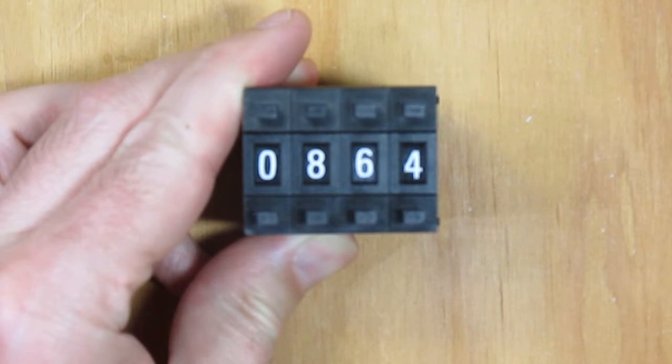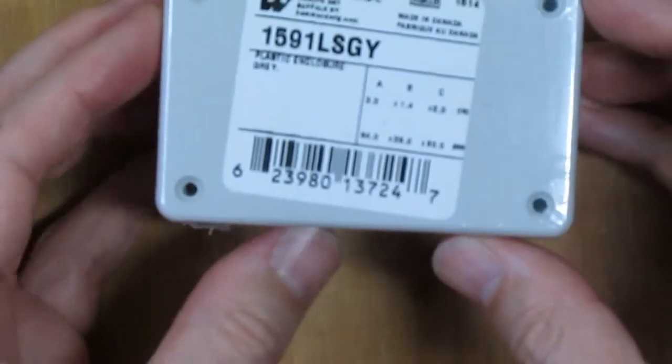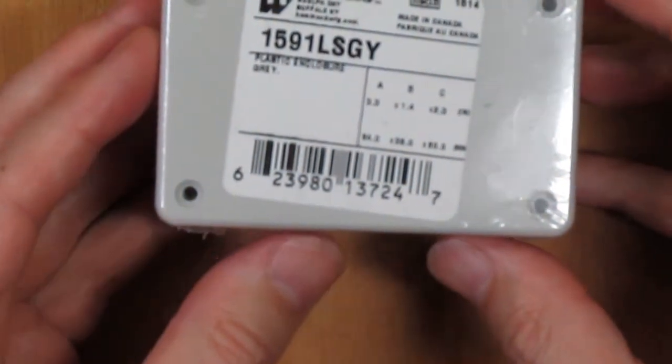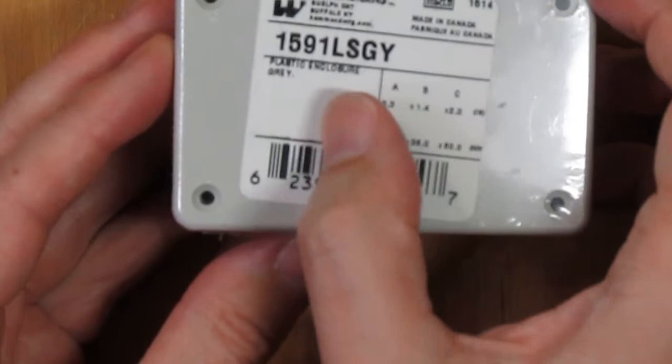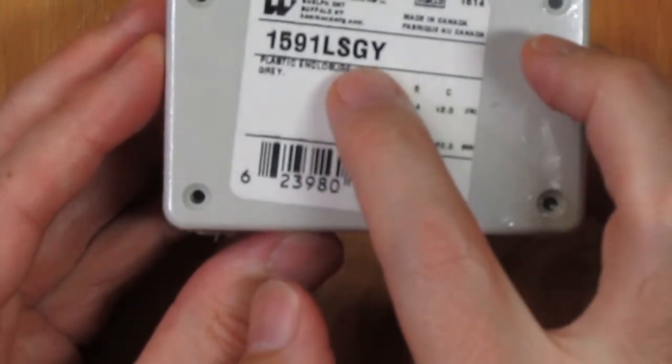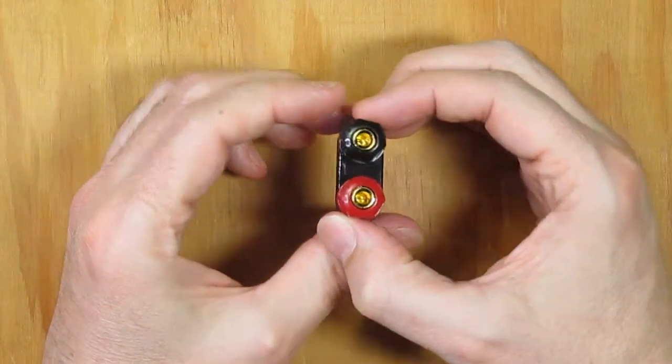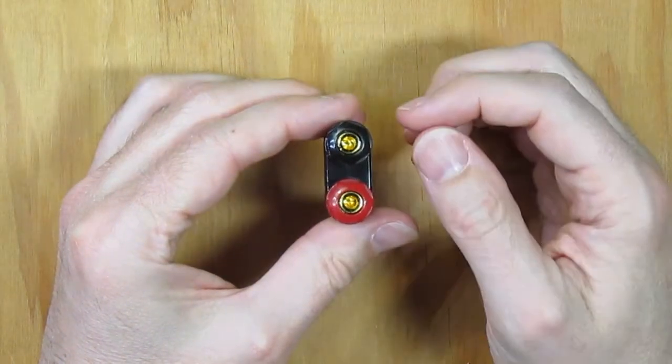Okay, so now we need a box for this. What I happen to have in my collection that seems like it would work is a plastic Hammond 1591 LSGY. I think the GY just means it is gray color. The other thing I need to do is use banana plugs for my antenna wires.